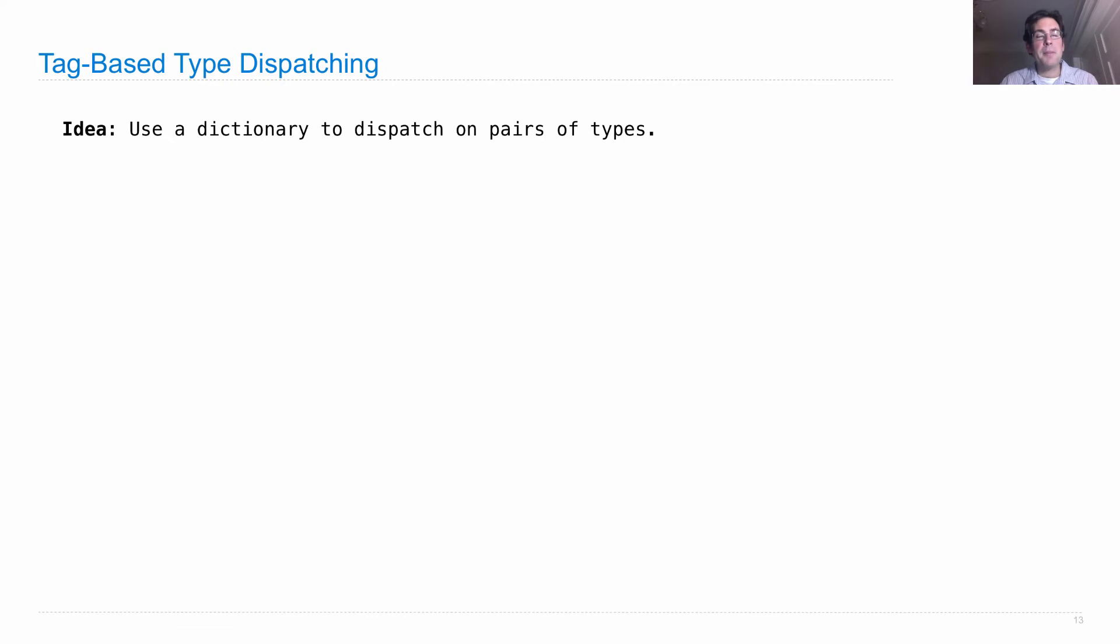So here's part of the implementation. We're going to define a function type_tag, which takes in some x, and returns whatever's in the type_tags dictionary for that type.